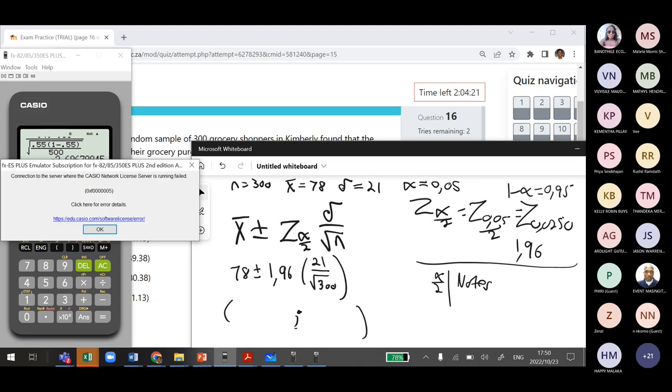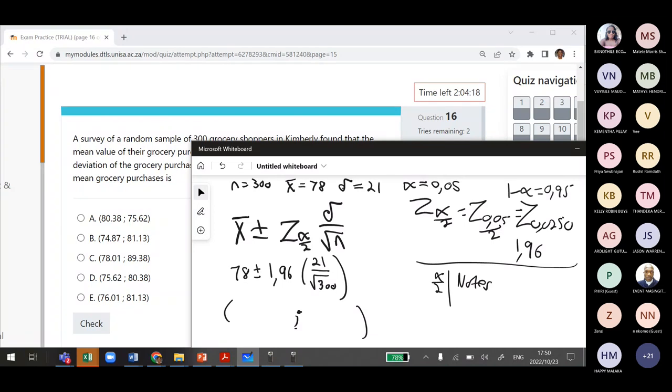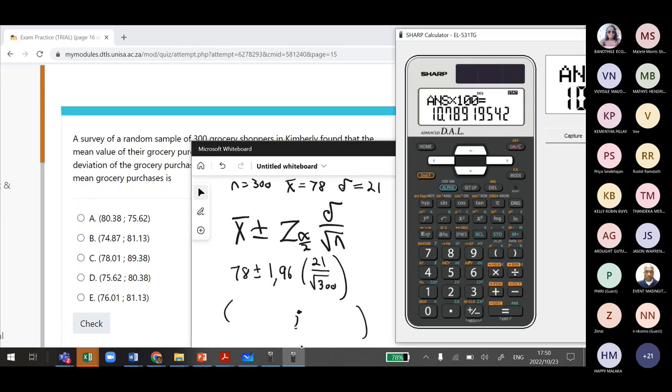So if I take my calculator, I lost my calculator because I had to restart my network. So this one still works. You can use this. So 78 minus 1.96 times 21 divided by the square root of 300. The lower area is 75.62.